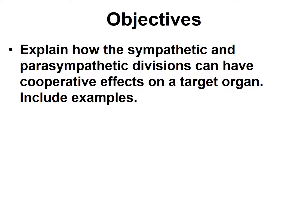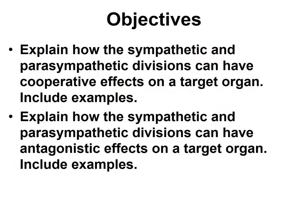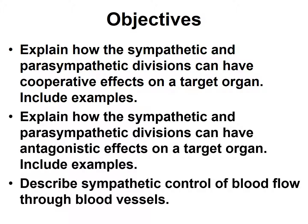To summarize, the objectives of this screencast were: explain how the sympathetic and parasympathetic divisions can have cooperative effects on a target organ with examples; explain how they can have antagonistic effects on a target organ with examples; and describe sympathetic control of blood flow through blood vessels.